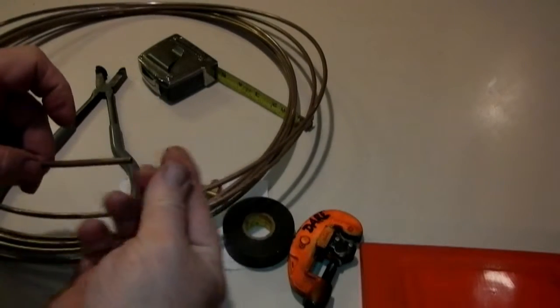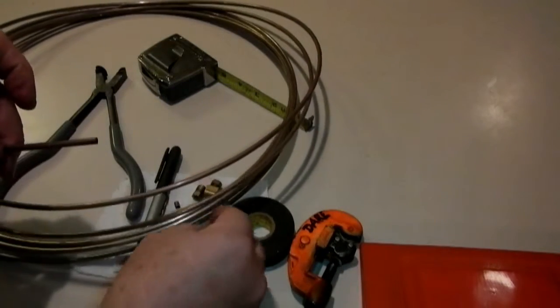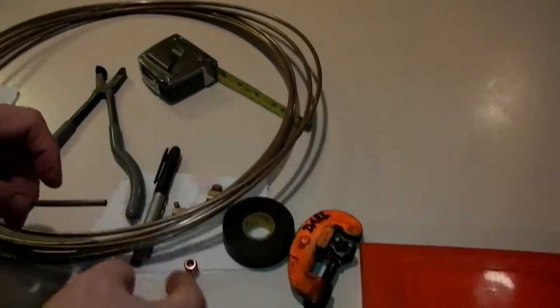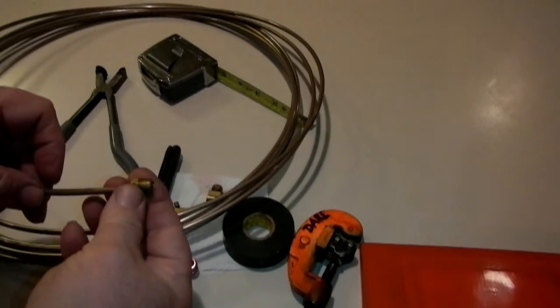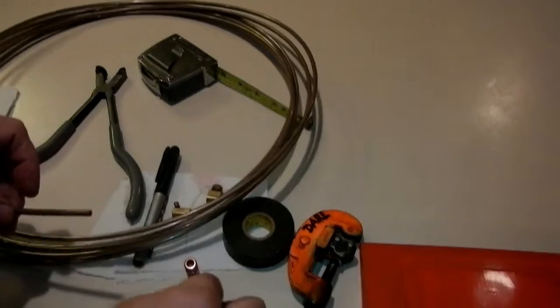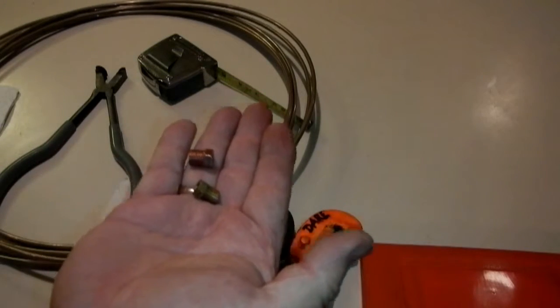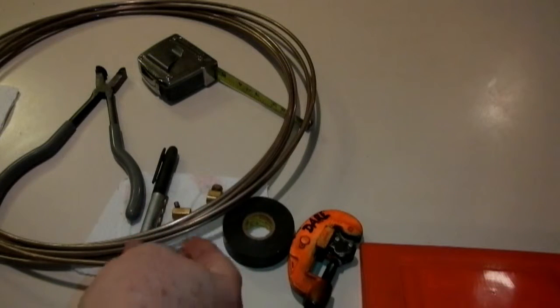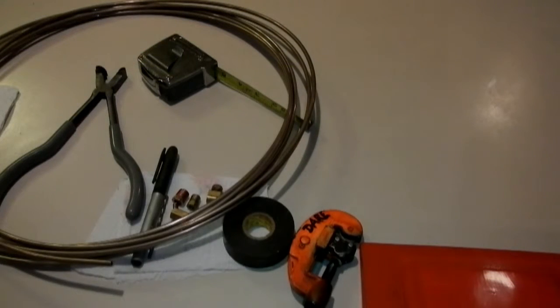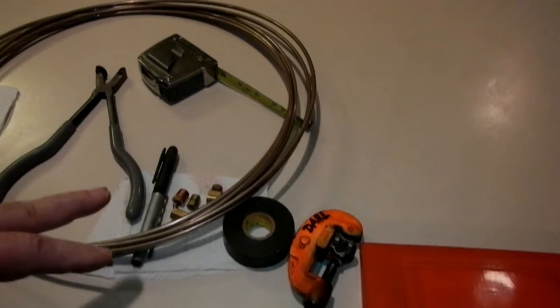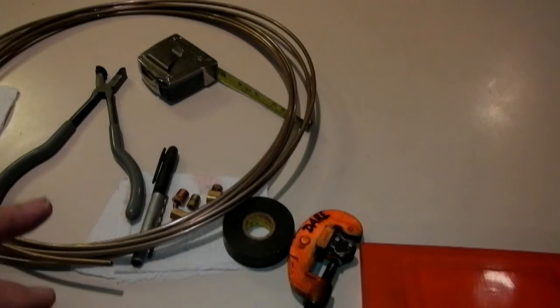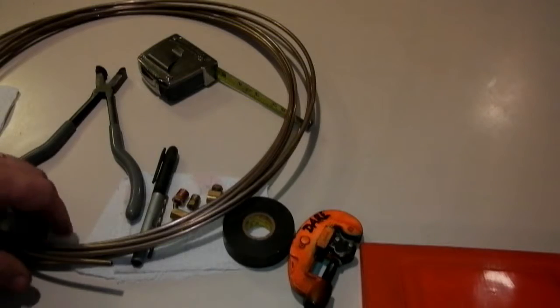Now these nuts fit over with no problem. That's the seven-sixteenths and this is the three-eighths. Why two sizes? Because a lot of times on a combination proportioning valve, they'll have both of those sizes so you don't put the wrong hose in the wrong hole.